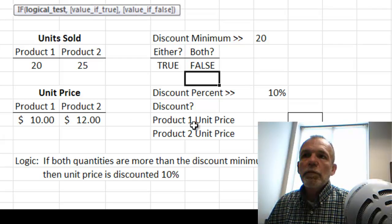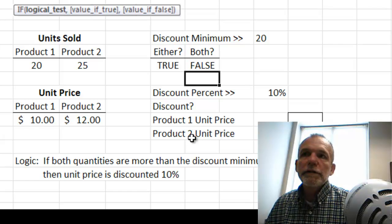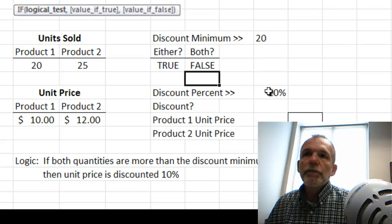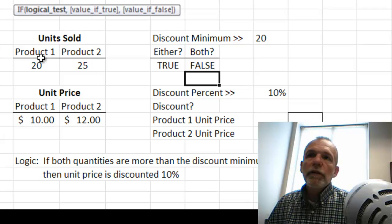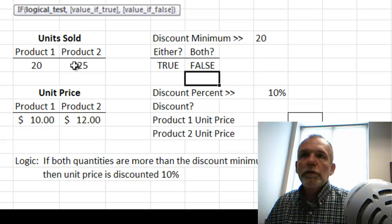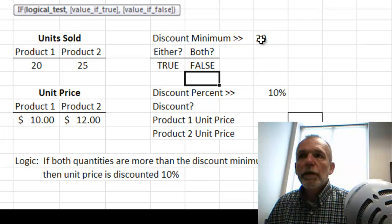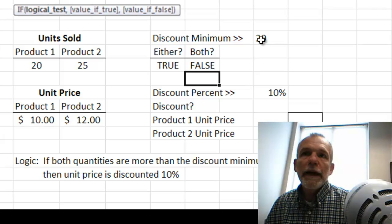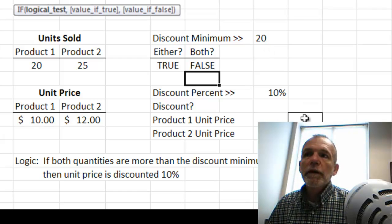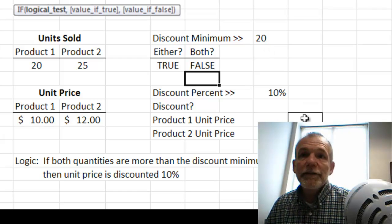And suppose that the unit prices will get a discount of 10% if the two products being sold both exceed their discount minimum. So we'd be looking for an AND condition to be the basis of getting a discount. So let's combine that in an IF statement.